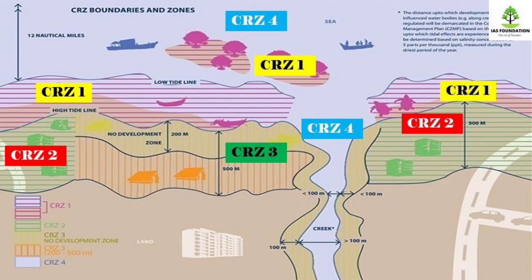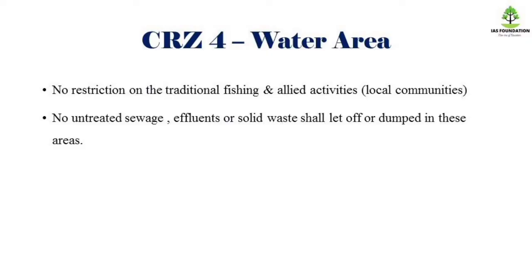Next is CRZ4 area — the CRZ4 area is the water area. There are 12 nautical miles in the water area. There are creeks and rivers. You can do fishing in traditional local communities. There are restrictions — if you have a sea wash, factory waste, you can get a waste area. You can also get a solid waste dump.